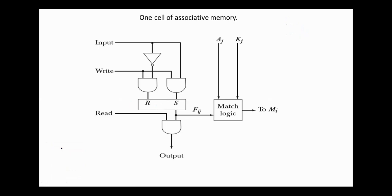Regarding the write operation, the input bit is stored in the flip-flop during the write operation. If the input I is zero, we'll have a reset state, so zero will be stored in the flip-flop. And if I is one, we'll have the set state, so one will be stored in the flip-flop.